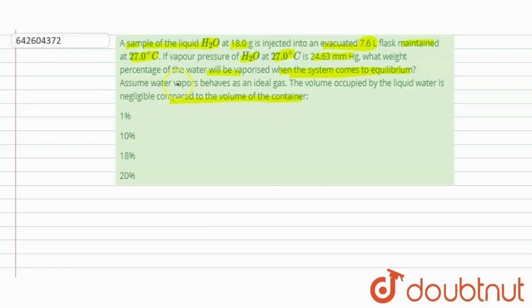From the ideal gas equation, we have PV is equal to nRT. From here we can calculate the number of moles of water. But first we are given that pressure is 24.63.